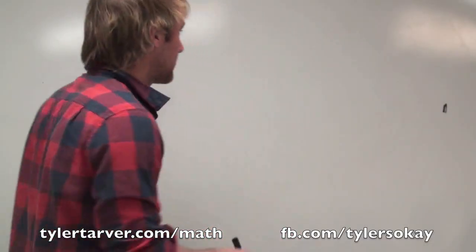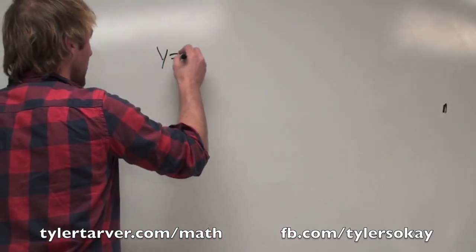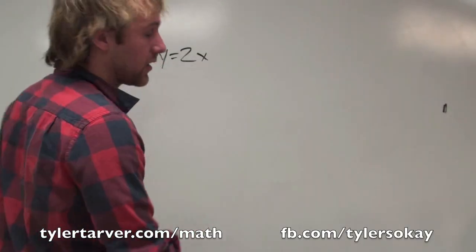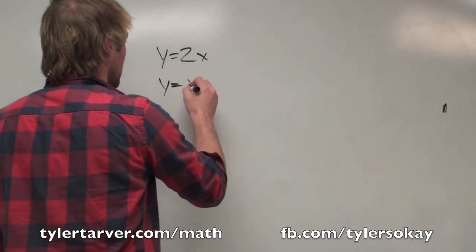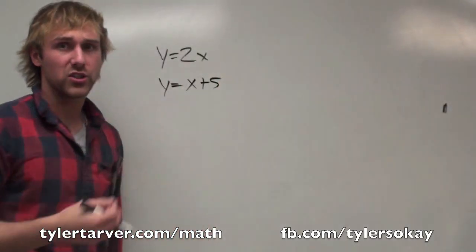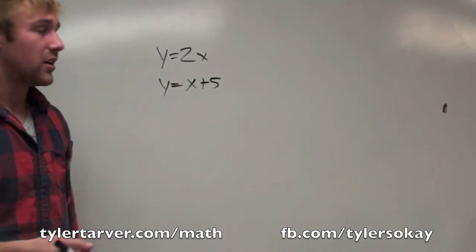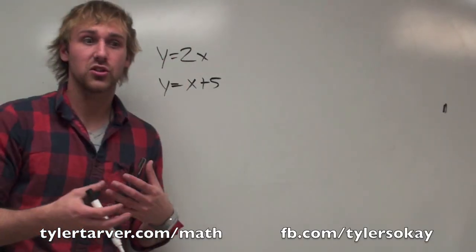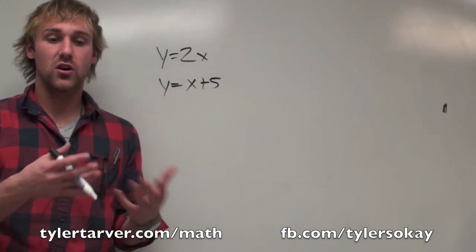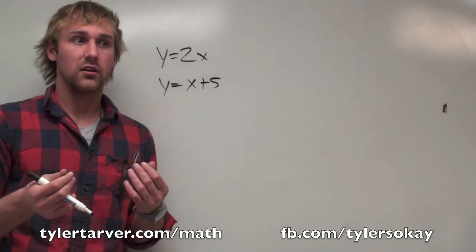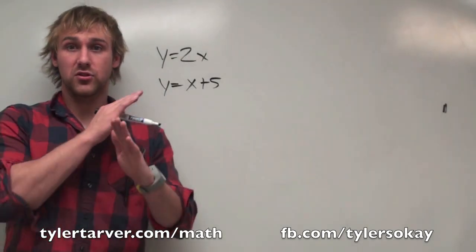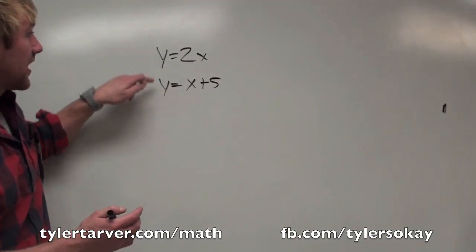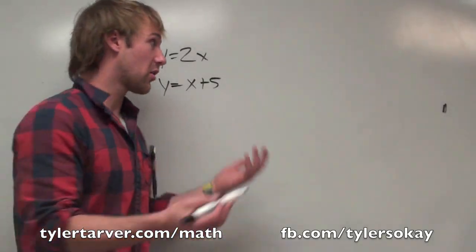What you'll have is two equations. For instance, y equals 2x and y equals x plus 5. What you're going to do is solve for x and y. Essentially, when you solve a system of equations, you're wanting to find where those two lines cross. That's our goal — we want to find where this line and this line would cross each other on a graph.